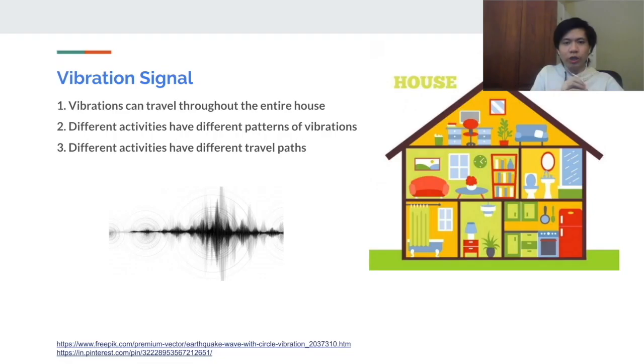Based on such question, the vibration signal may be the potential solution for the following reasons. Firstly, the vibration signal can travel through the wall or the floor in the entire house. Secondly, different indoor activities have different vibration patterns and different travel paths. Hence, in theory, it is possible for us to use only one sensor at one point of the wall and detect the vibration signal from different indoor activities.